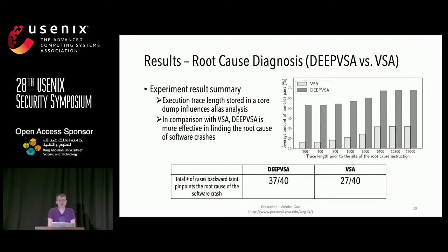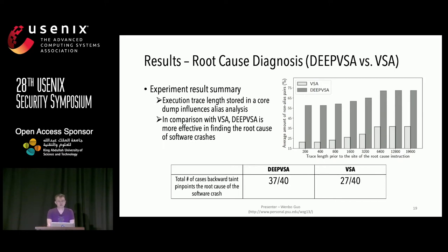Here are the results for root cause diagnosis. Recall that we only have a limited execution trace. We vary the length of instructions prior to the crash and evaluate the alias relationship identified by our approach versus traditional VSA. We find that execution trace length does influence alias analysis accuracy to some degree. But more importantly, across all settings, our model significantly beats traditional VSA in alias identification accuracy. As a result, DeepVSA is more effective in finding root causes than traditional VSA, identifying 10 more root causes.